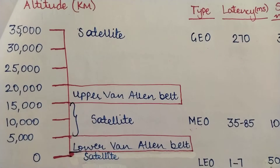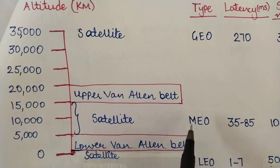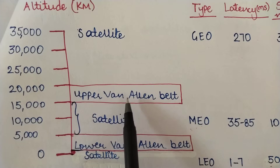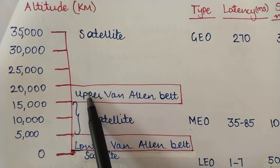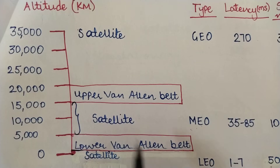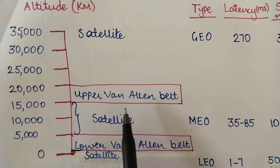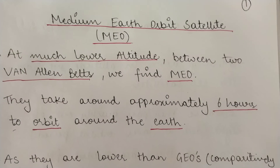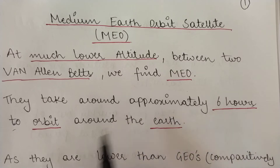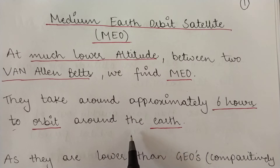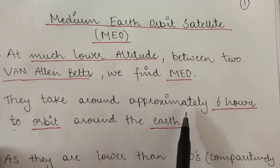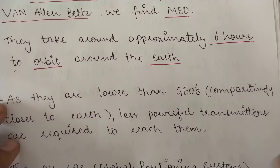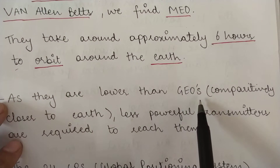The medium earth orbit satellite is placed somewhere between the two Van Allen belts — that is, between the upper Van Allen belt and the lower Van Allen belt. They take approximately six hours to orbit around the earth, so the orbital period of a medium earth orbit satellite is approximately six hours.